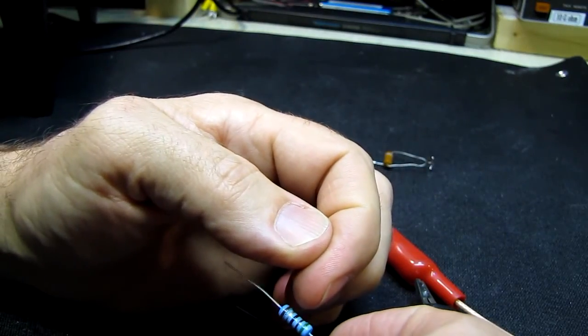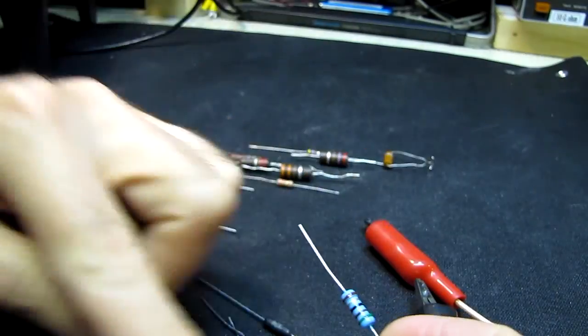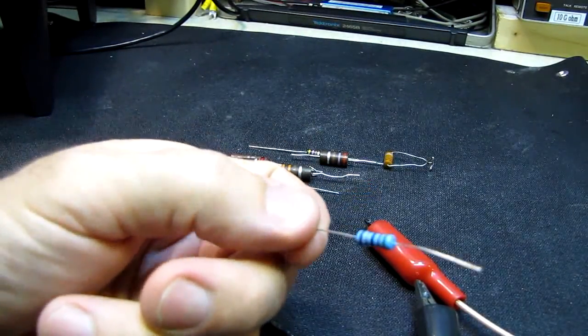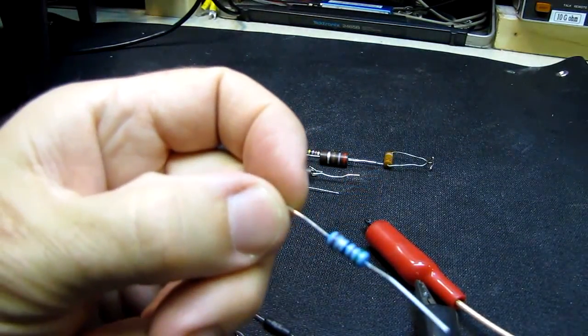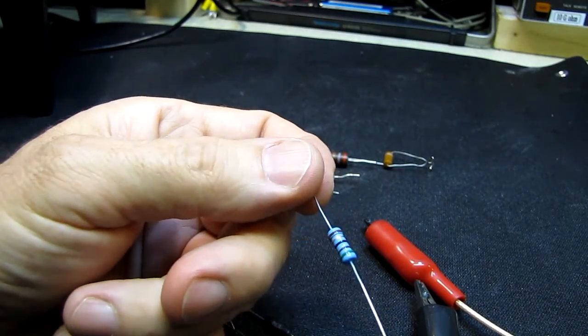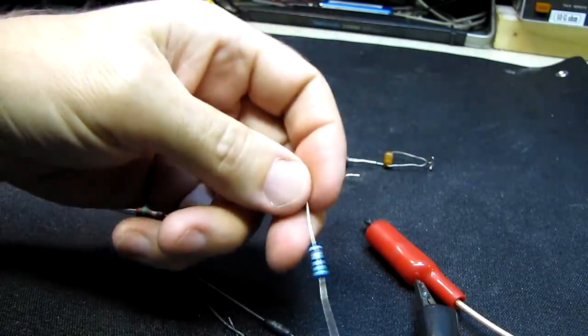Then they spiral cut this with a laser, just like a coil, to trim the resistor to value. And depending on the value, and depending on how much trimming was done, they can become inductors. And that can be a problem at RF.